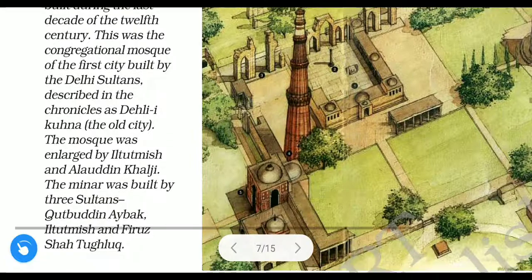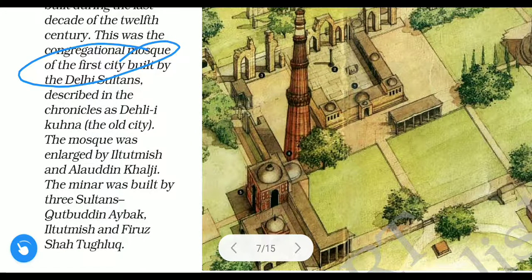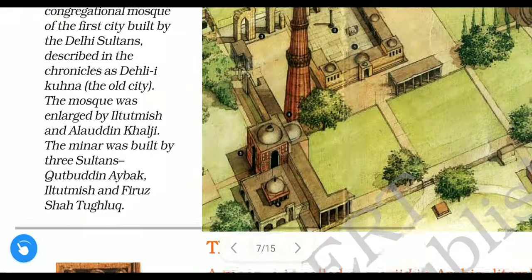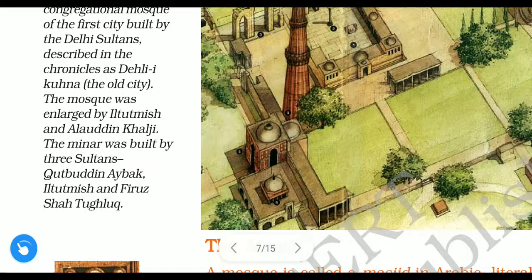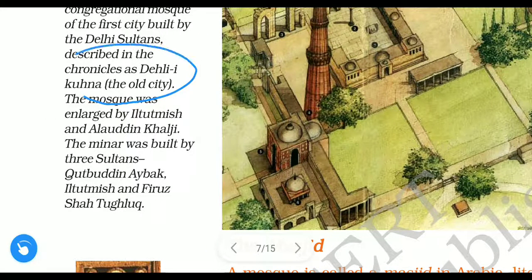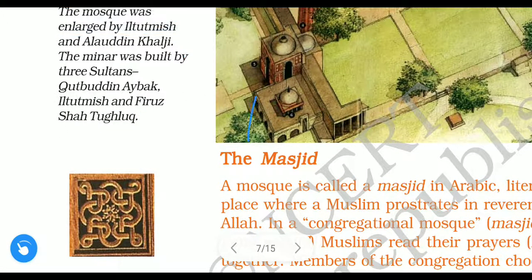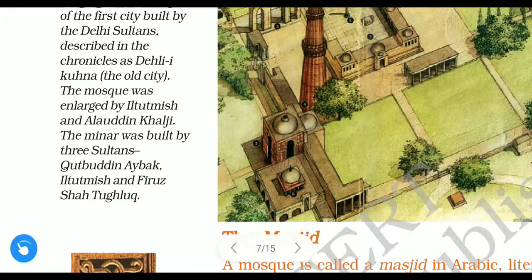Quwwat-ul-Islam was a congregational mosque — meaning a place for assembly or a group of people. It was the congregational mosque of the first city built by the Delhi sultan, described in the chronicles as 'Delhi.' The mosque was later enlarged by Iltutmish and Alauddin Khalji.